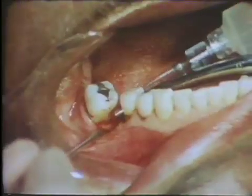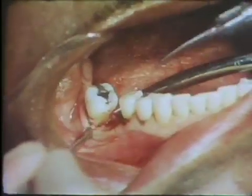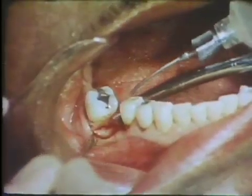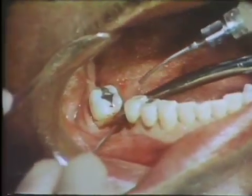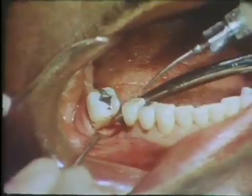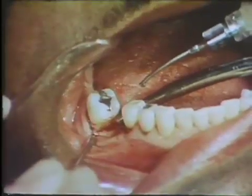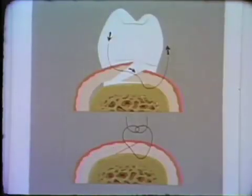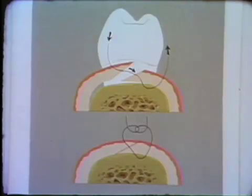The surgical site is again irrigated with sterile saline solution. The intrabony defect has been eliminated, and a gradual slope of the ridge is apparent. The illustration indicates how the buccal and lingual flaps are fitted together after removal of the bone. Suture placement is accomplished in such a way so as to assure that the flaps are overlapped properly to facilitate healing by primary intention.